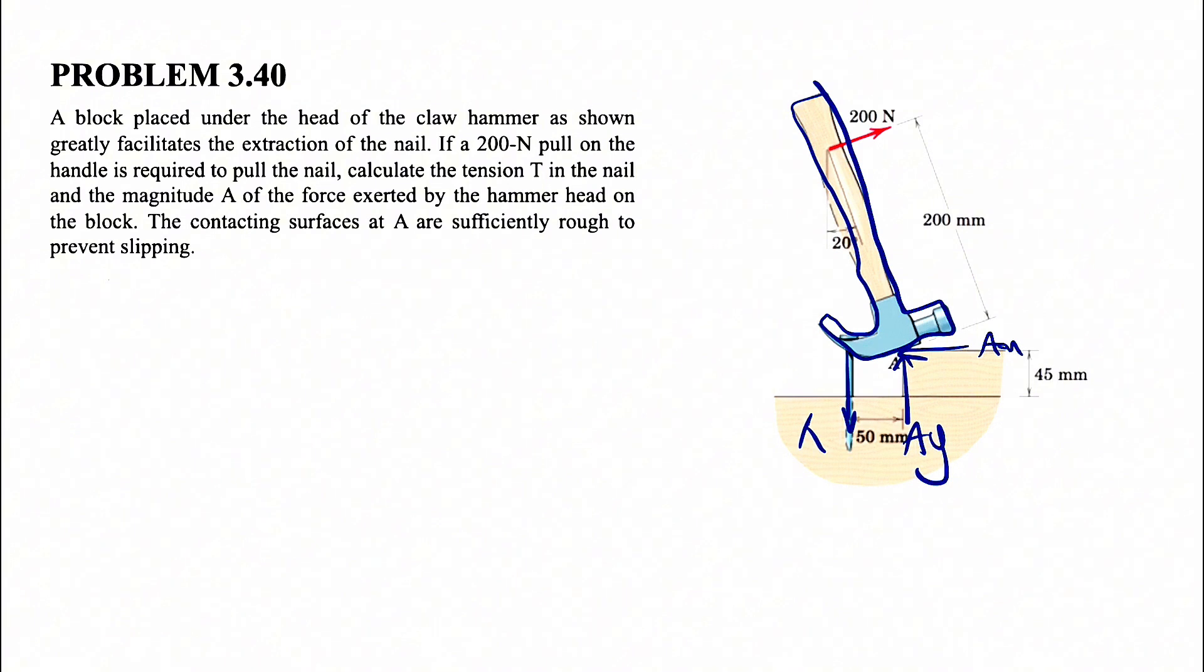We are in equilibrium. We have three equations. Sum of all forces in X equals zero. We can show our X and Y here. We have sum of all forces in Y equals zero. And we can find one moment equation about any point. We can see we have three unknowns and three equations. We should be able to find all the unknowns.